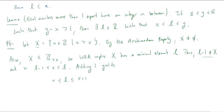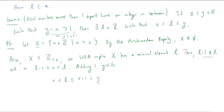Now, what about x plus 1? I claim x plus 1 is less than y. Why? We know y minus x is greater than 1, and adding x to both sides gives y is greater than x plus 1. So putting it together: x is less than l, which is less than y — and that's exactly what we wanted to prove. We've completed the proof that there is always an integer between any two real numbers that are more than one apart.